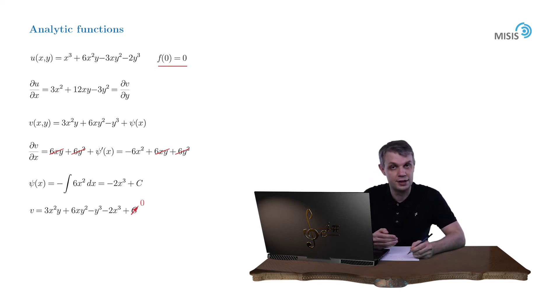So our analytical function is fully restored. And you may wonder what it looks like as a function of z. Well, you can always find it using the substitute x equals z plus z complex conjugate over two and y is equal to z minus z complex conjugate over two i.